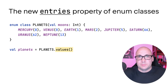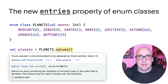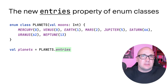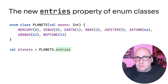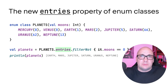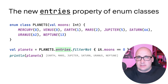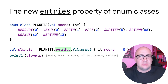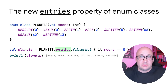The new entries property in enum classes is here to replace the values function. There is a difference in the return type: the values function returns an array, while a call to the entries property returns a pre-allocated immutable list of defined constants instead. This change fixes potential performance issues and it's much more convenient to work with the list if you need to process the enum constants in your program.